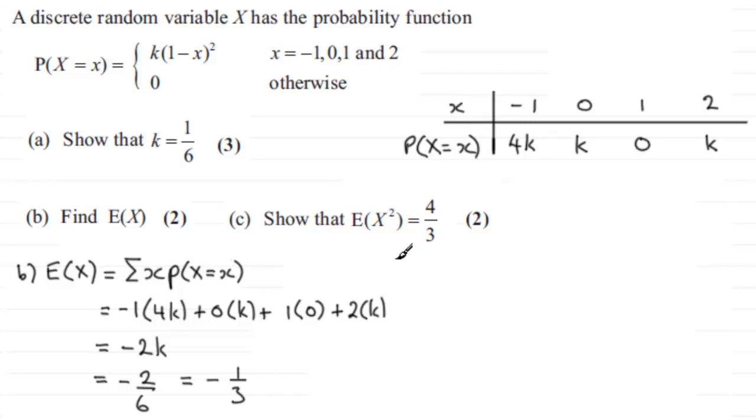Now in the next part, part C, we've got to show that E of X squared is equal to 4 thirds. Now E of X squared is a formula you should be familiar with. It is sigma, the sum of any of the observed values x squared multiplied by the probability that x equals that observed value.